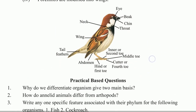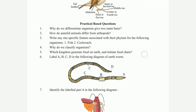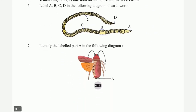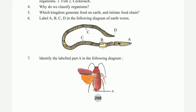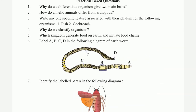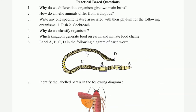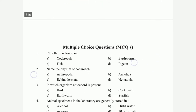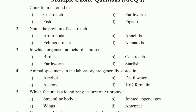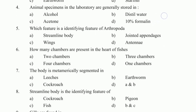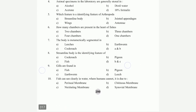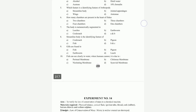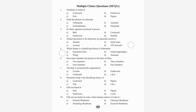Birds: class data; adaptive features — body is streamlined, skeleton is light and hollow. Body is covered with feathers; four limbs are modified into wings. Diagram shows eye, beak, chin, throat, neck, wing, tail feathers.